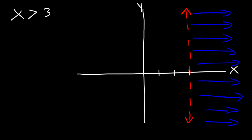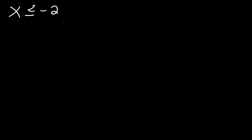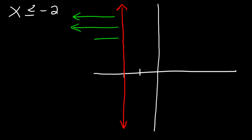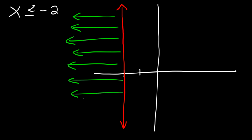Because it's an inequality, there's a range of answers, so you have to shade the appropriate region. Now let's try another one: graph x less than or equal to negative 2. Whenever x is equal to a number, it's going to be a vertical line. And because it's less than or equal to, we're going to draw a solid line as opposed to a dashed line. Less than is towards the left side, so you have to shade everywhere to the left of this line.